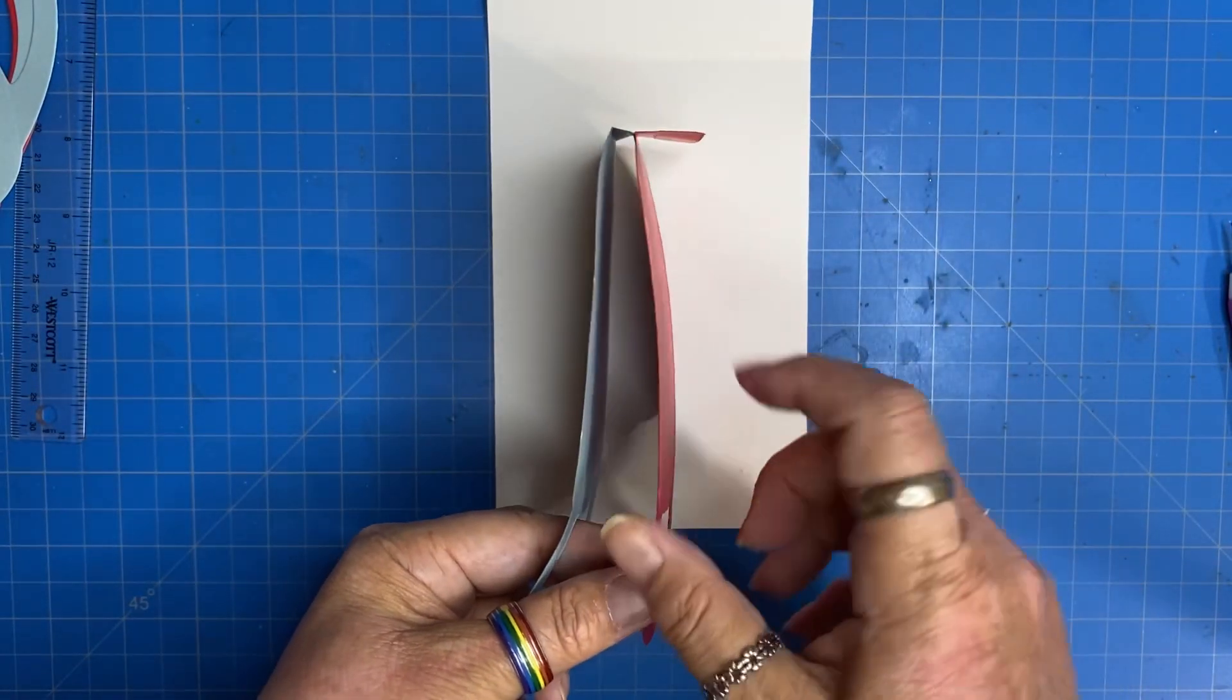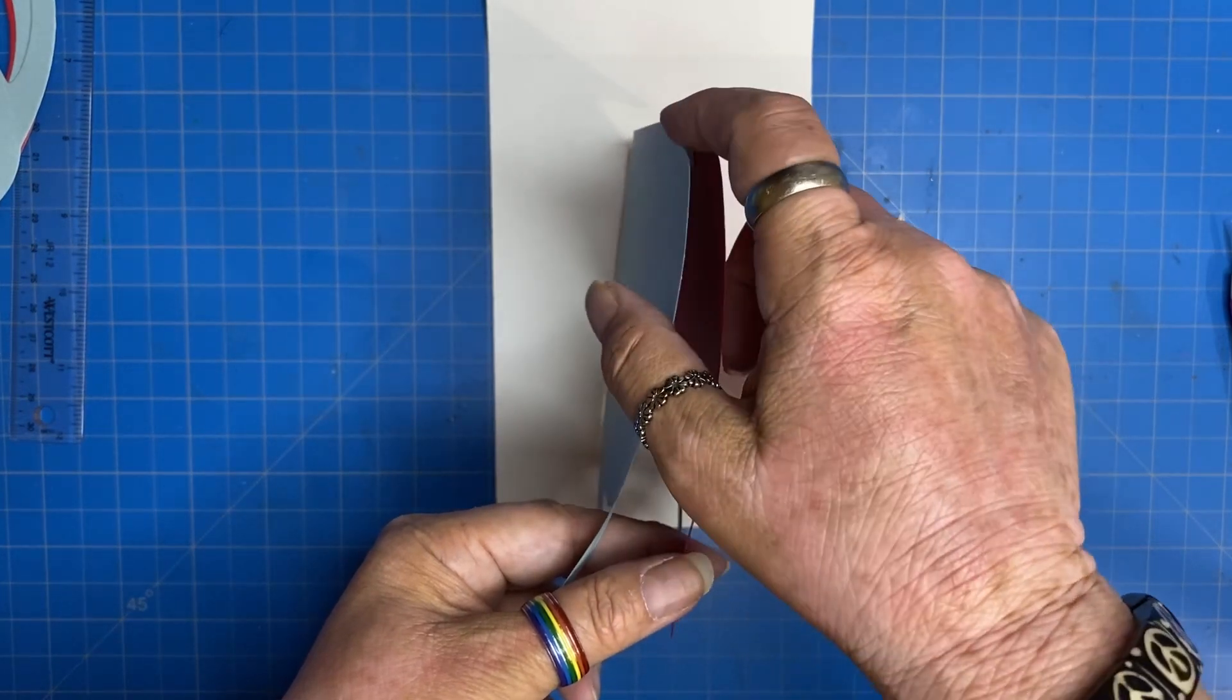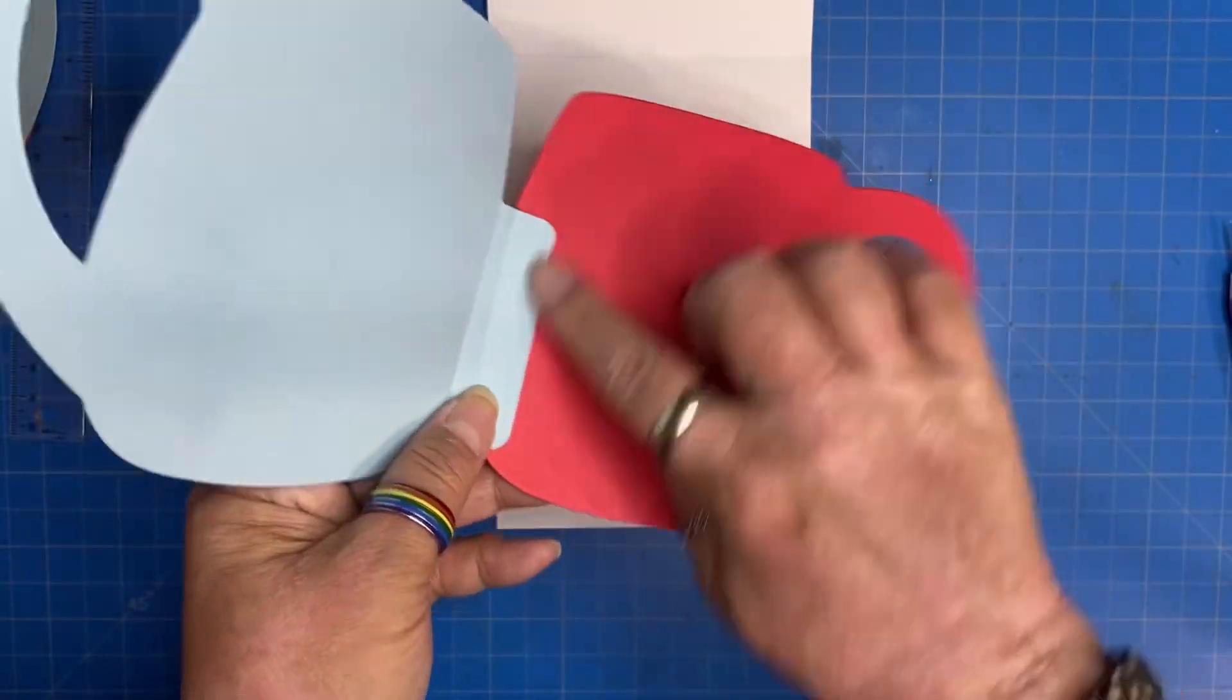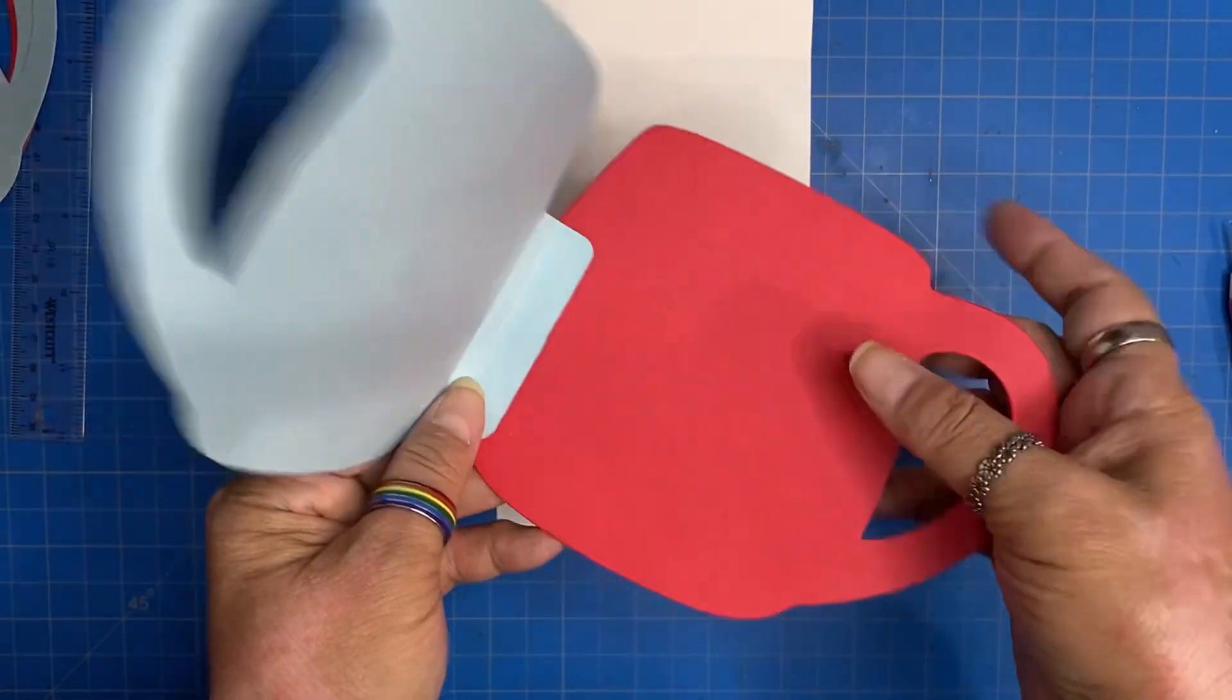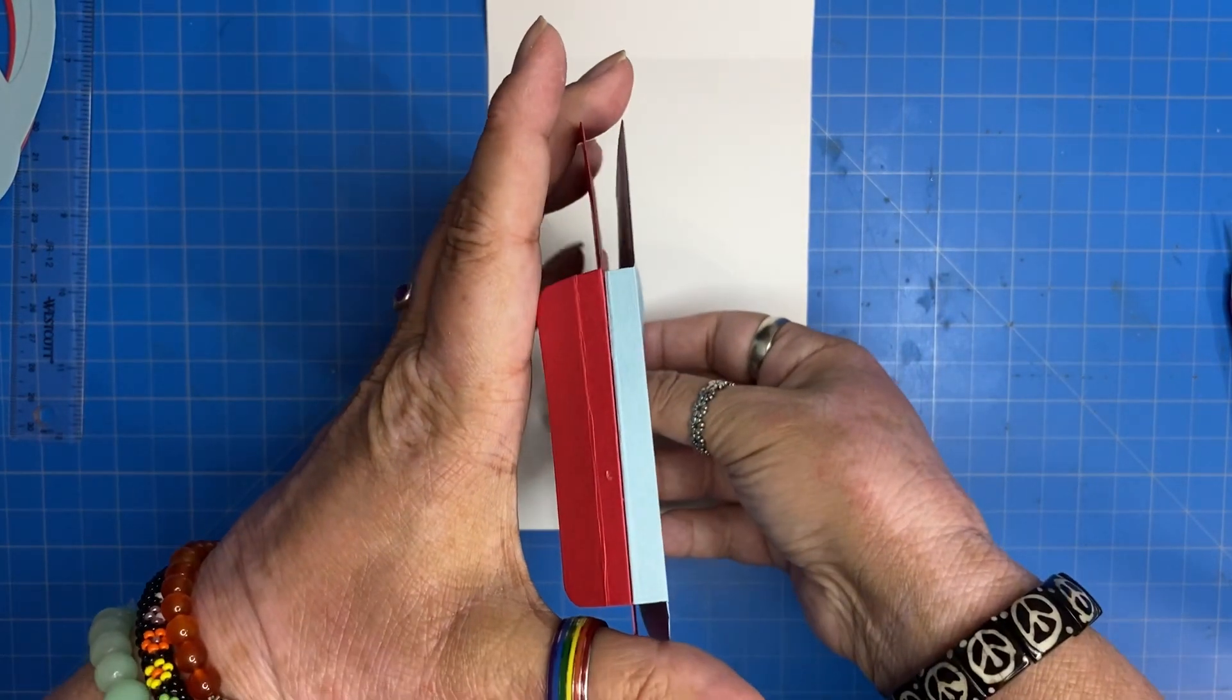And it'll look just like this. So I've got the page, the quarter-inch gusset, and then the half-inch is glued to the next page. From the outside, it looks like this.